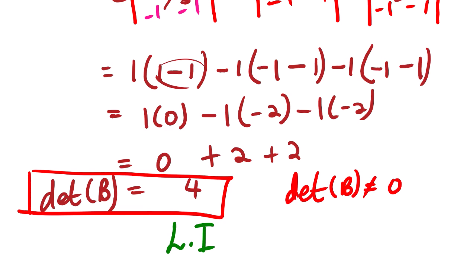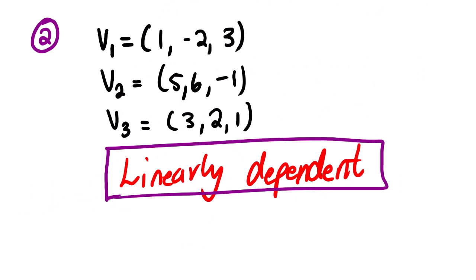For our next example, prove that v1, v2, v3 are linearly dependent — I will leave this for you. That's it for this lesson. This is Wahula SJ. Thank you very much.